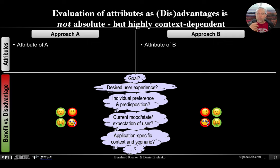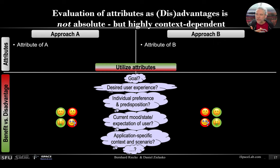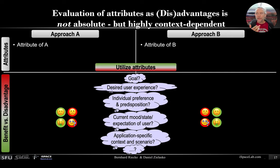What we propose is that by analyzing the attributes in this way, we can really start to utilize them. We propose that this context-dependency should be taken into account for future studies and might also help to provide more personalized, specific, and flexible interfaces. Thanks a lot for listening, and feel free to contact us if you come up with any interesting attributes and discussions.